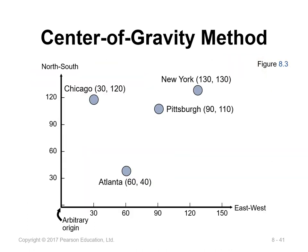Plotting the center of gravity coordinates (66.7, 93.3) on the map, the new warehouse location is identified near Ohio. This is where the company should build its new warehouse to minimize distribution costs.